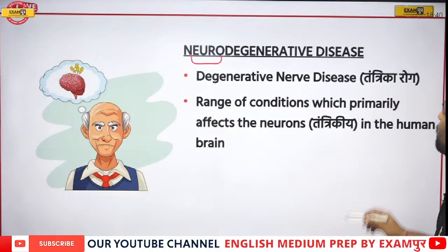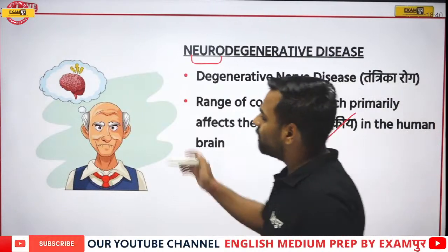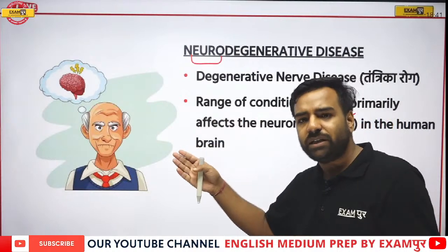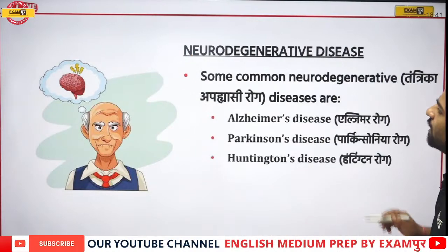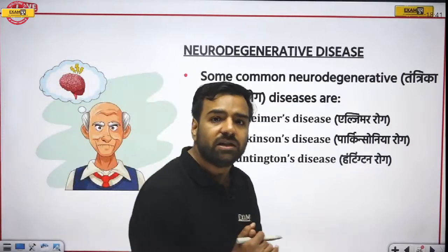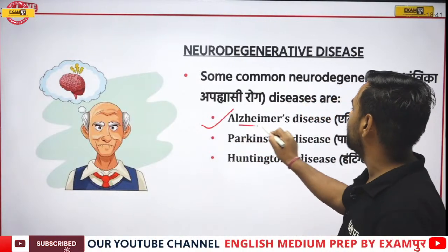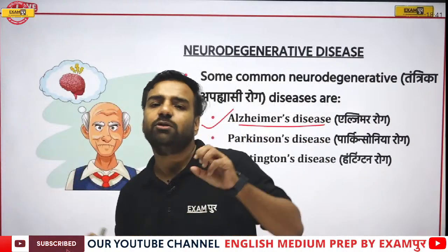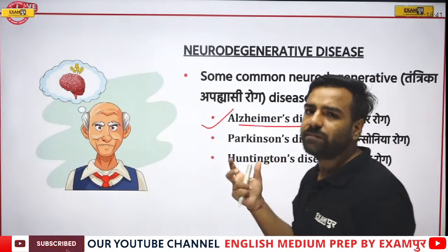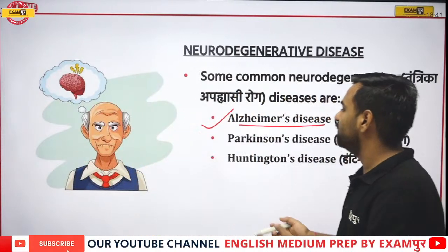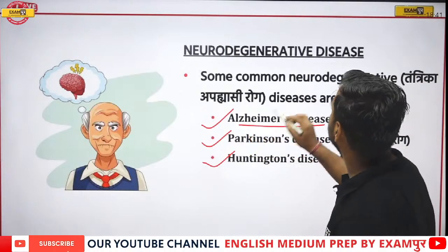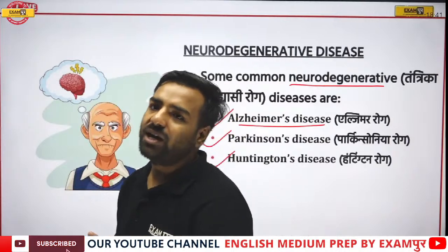Neurodegenerative diseases are degenerative nerve diseases — a range of conditions primarily affecting neurons in the human brain. For example, late former Prime Minister Atal Bihari Vajpayee suffered from Alzheimer's disease in his final years, where he would forget everything. These diseases — Alzheimer's, Parkinson's, and Huntington's — are all related to nerve cells.